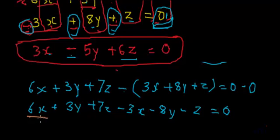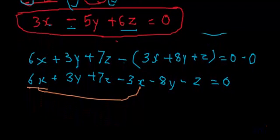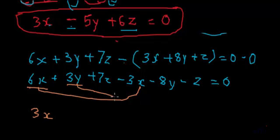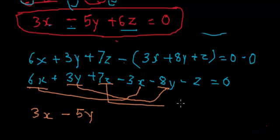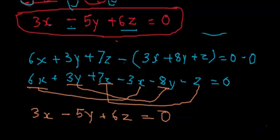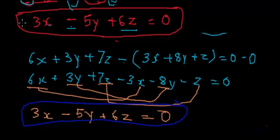Now we collect like terms. 6x minus 3x is 3x. For y: 3y minus 8y — the bigger term is 8, so subtract 3 from 8 and keep the negative sign, giving minus 5y. For z: 7z minus z gives plus 6z, equals 0. We get the same answer 3x minus 5y plus 6z equals 0 using both methods.